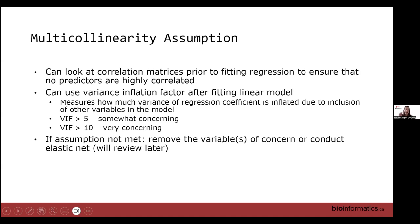If high multicollinearity is found, we can remove one or both of the variables of concern, or we can conduct elastic net, which will shrink variables to zero together rather than randomly setting one to zero. Patrick will review that later on today as well.